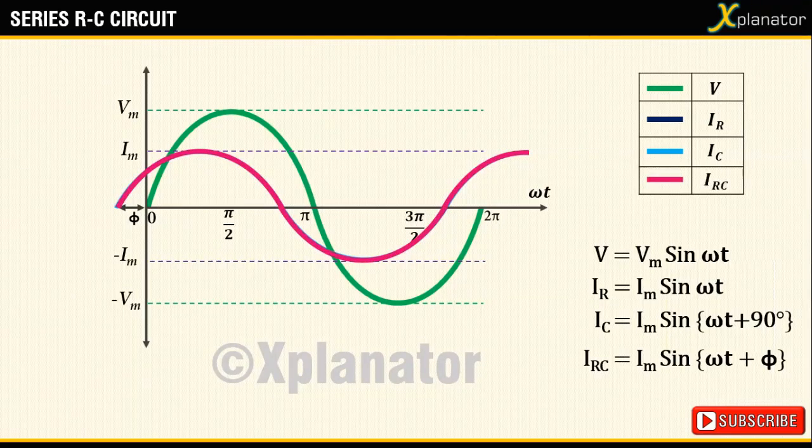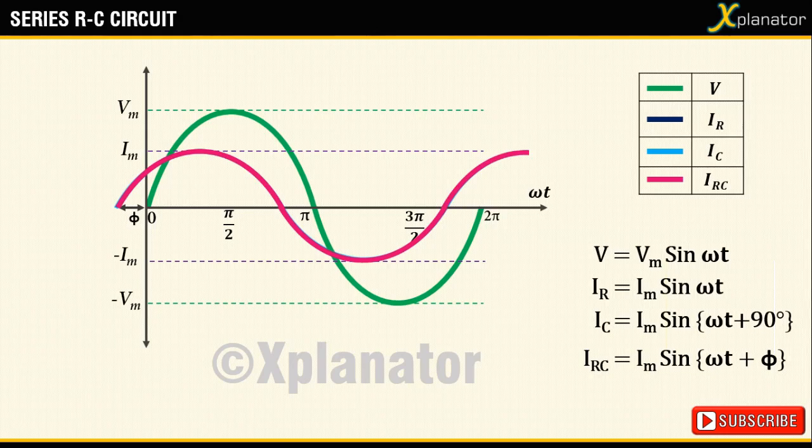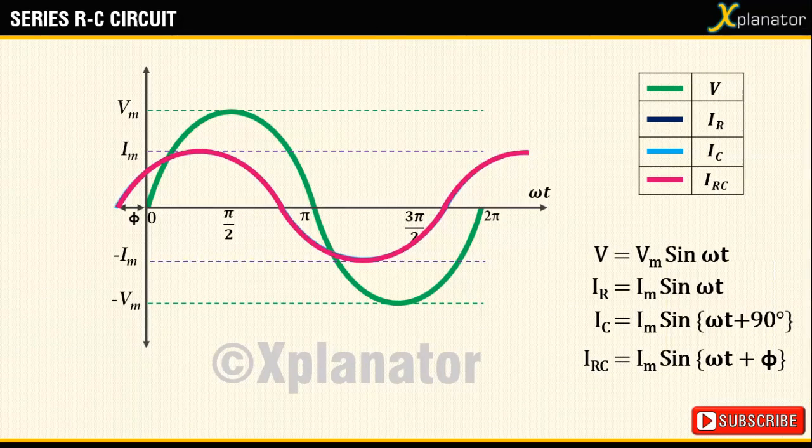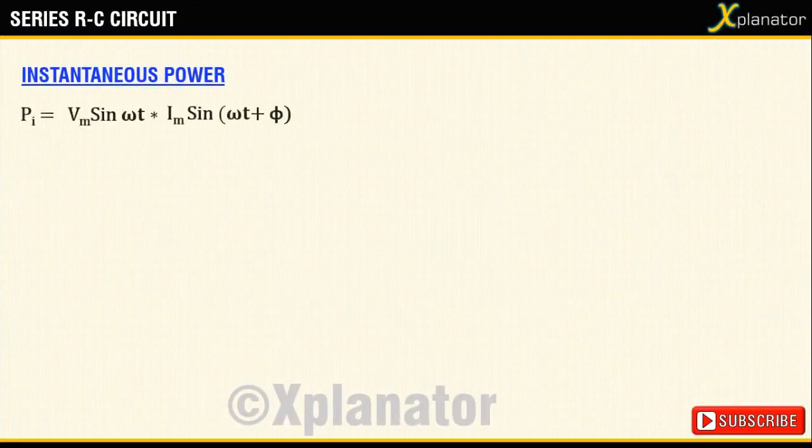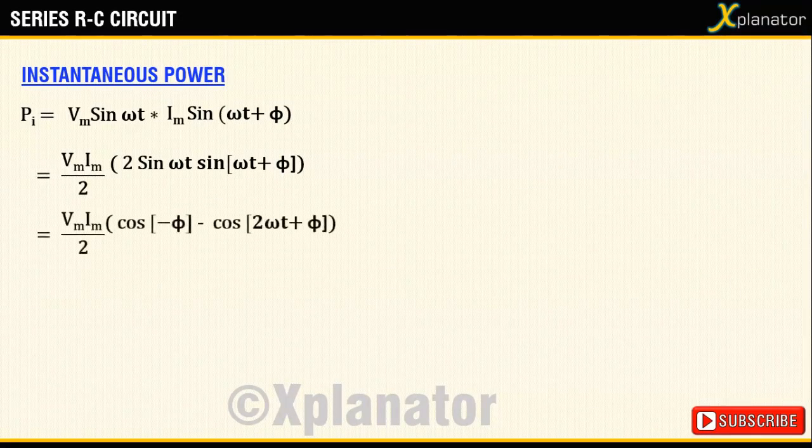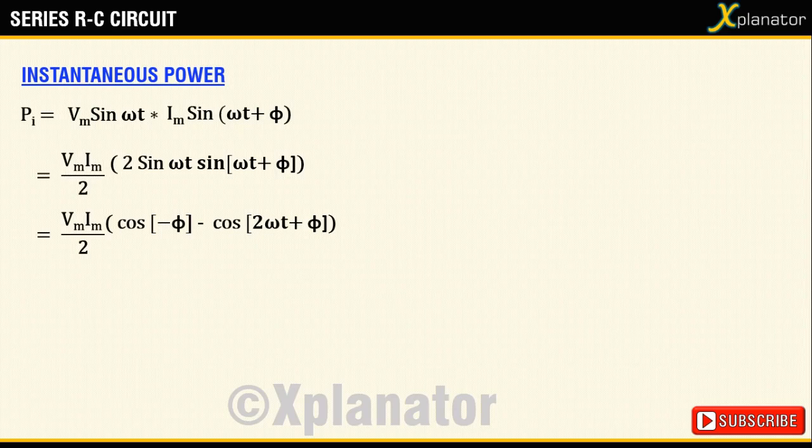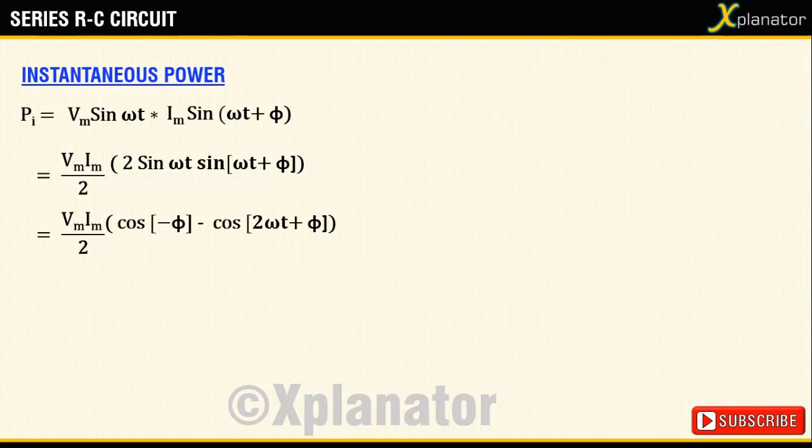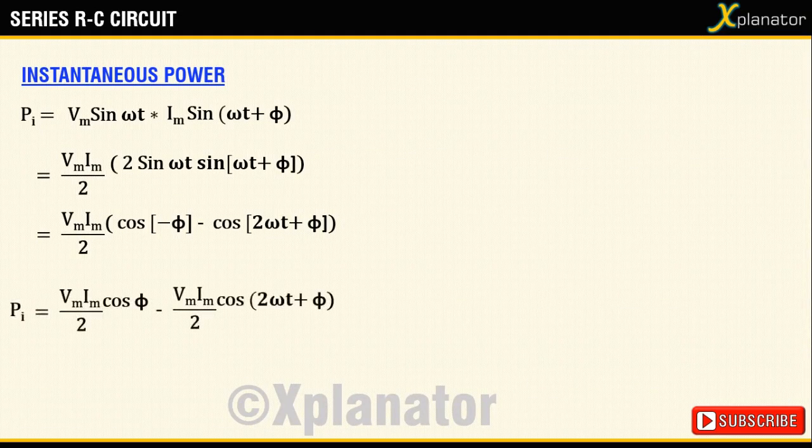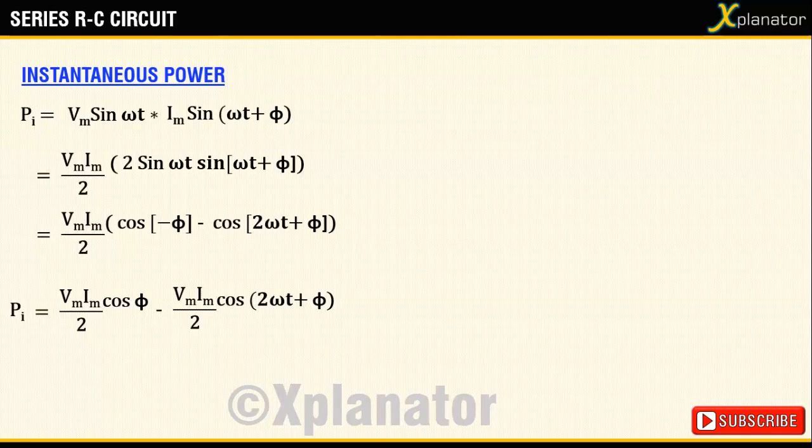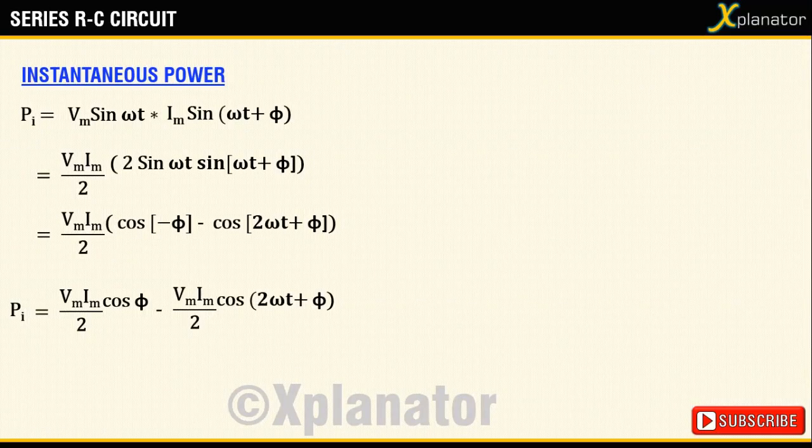With the voltage and current equations and their plots, it is possible to derive the power equation as well as plot the graph for power. For instantaneous power P which is equal to V into I, substitute the values and simplify using trigonometric identities. P is equal to VmIm/2 cos phi minus VmIm/2 cos of 2ωt plus phi. The terms may be separated and written as Vm/2 cos phi minus Vm/2 cos of 2ωt plus phi.